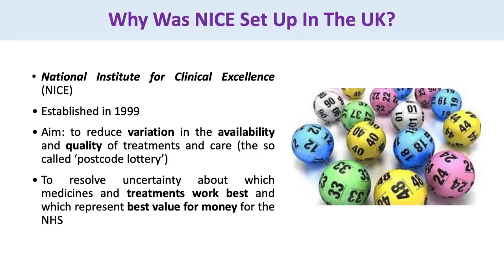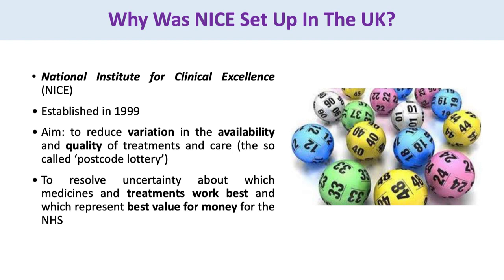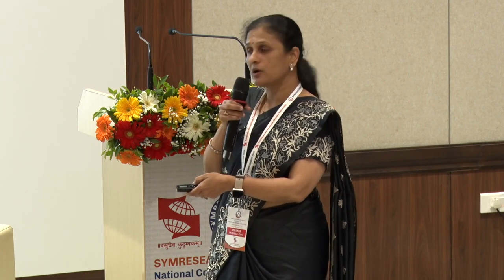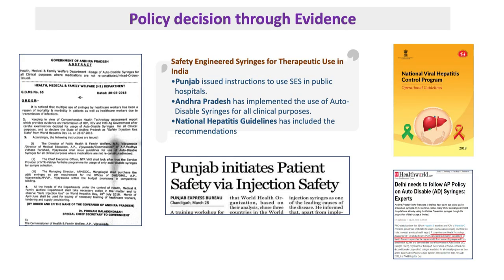This system is already in place in the UK — NICE already makes use of HTA before launching programs. One example is safety-engineered syringes: the Government of Punjab, which has many injection drug users, wanted to know which syringe is best to use. This was undertaken by the PGI Chandigarh group, which demonstrated that safety-engineered syringes were quite cost-effective through a modeling exercise that mimics real-life scenarios over a cohort of population. As a result, states like Punjab and Andhra Pradesh have shown interest in bringing safety-engineered syringes into their programs.